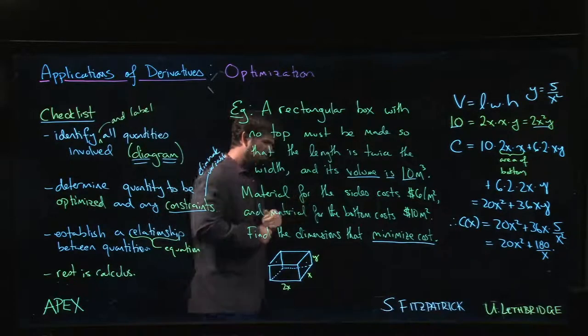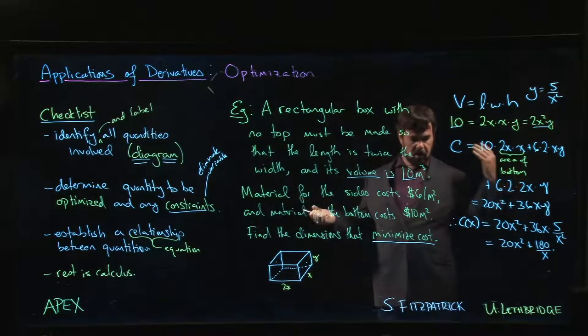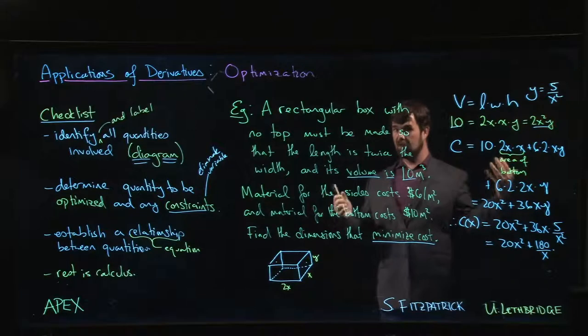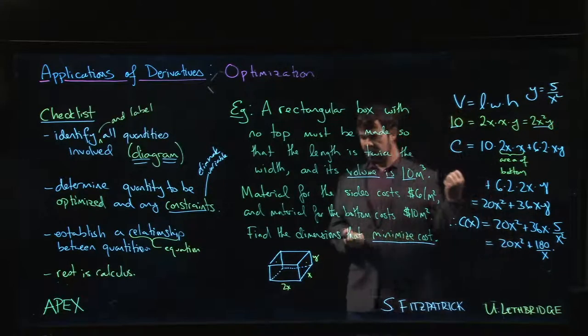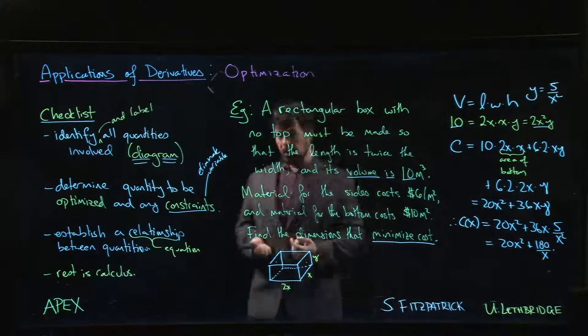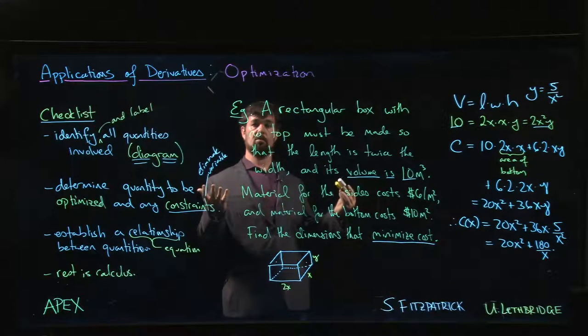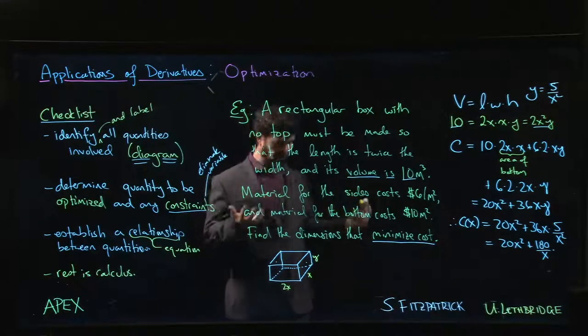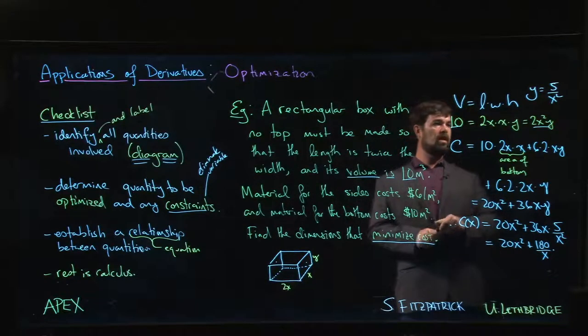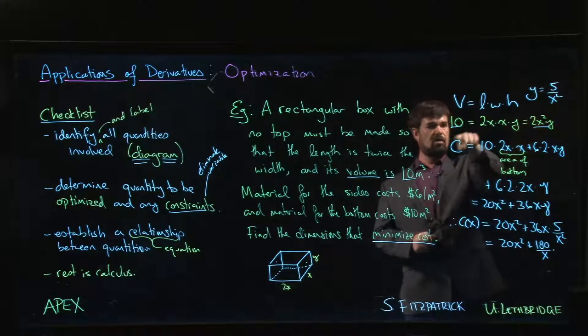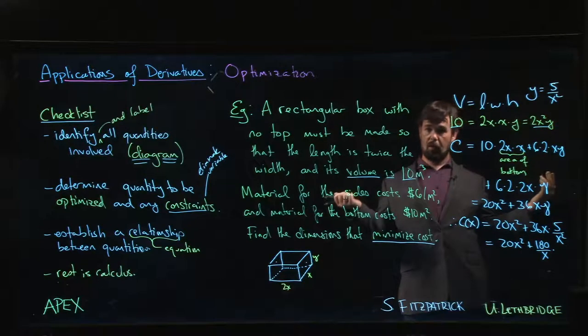So now we want to minimize cost. How do we minimize? Well, we should be looking for critical numbers. We're looking for a relative minimum. Should happen when the derivative is zero. Again, we should put a little bit of thought into domain before we proceed. What are the possible values for x here? The dimensions—what are the restrictions on the dimensions? Well, the constraint here is only that x squared times y times 2 should give you 10. Of course, x and y have to be positive—they're lengths.